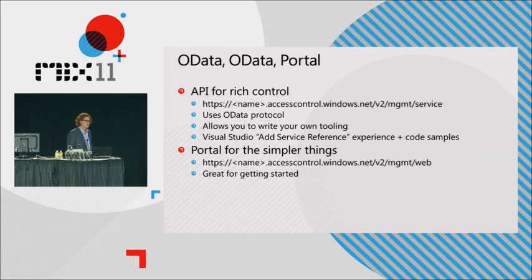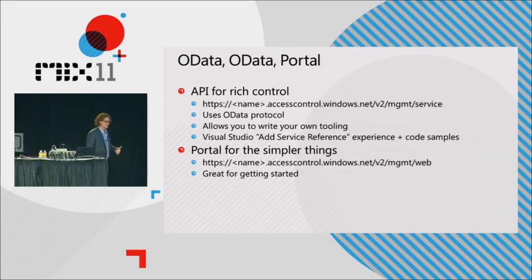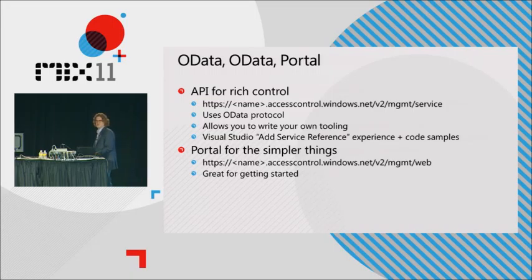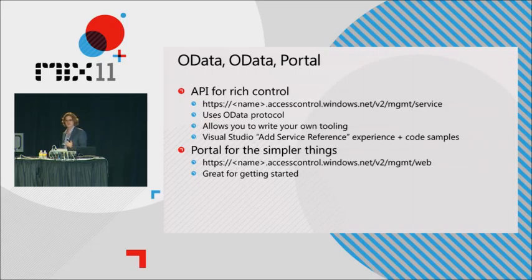There are two ways to manage your ACS service namespace: there's the API, which adheres to the OData protocol, and there's a management portal.